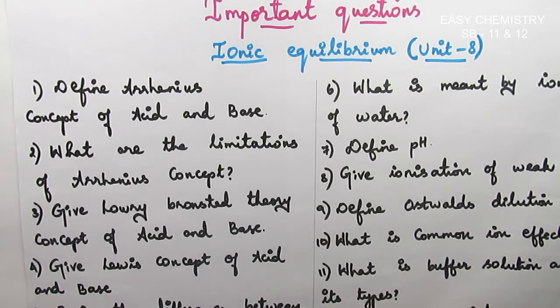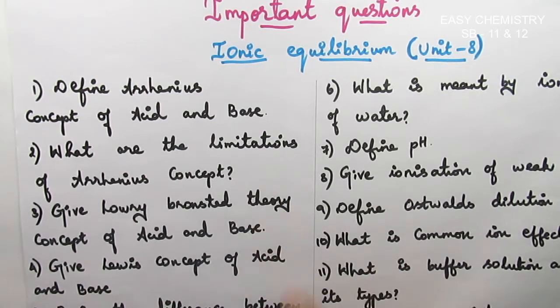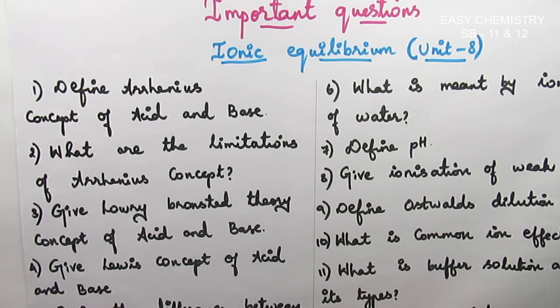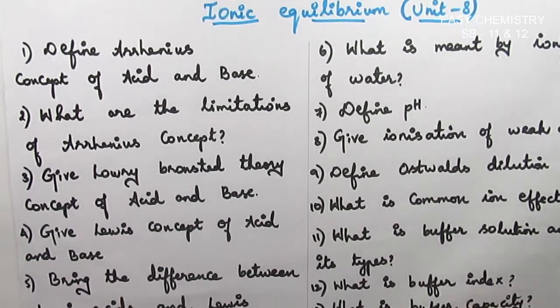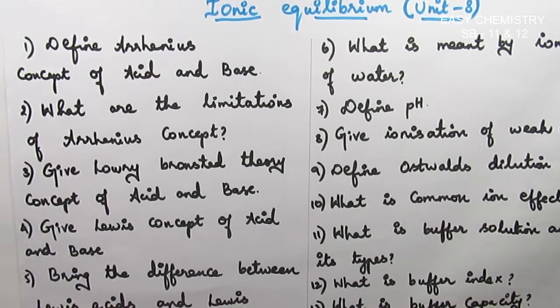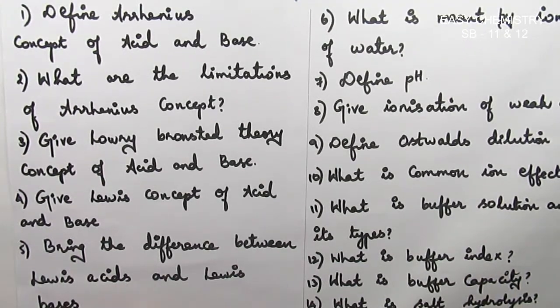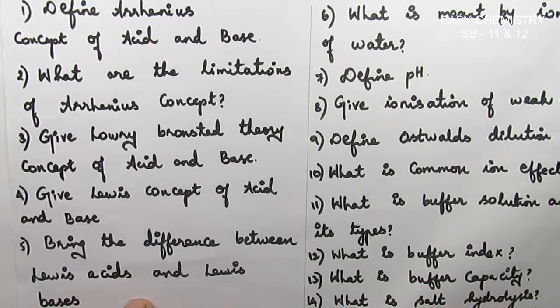What are the limitations of Arrhenius concept? Next, Lowry Bronsted theory concept of acid and base. Give Lewis concept of acid and base. Bring the differences between Lewis acid and Lewis bases. This is question number 5.